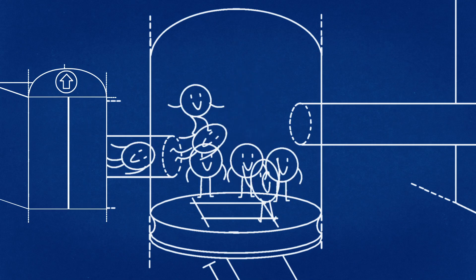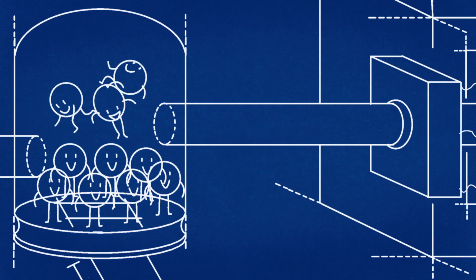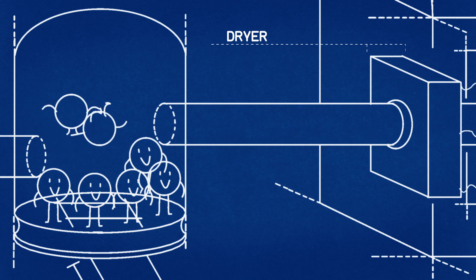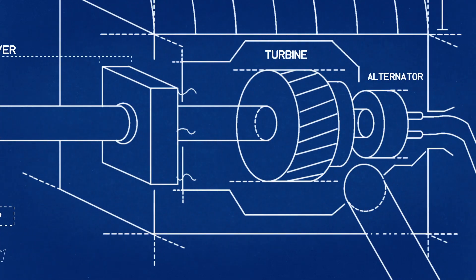The plant has a separator that receives the mixture of steam and water. Its job is to send the steam to a dryer where all traces of moisture will be removed, and the water to a pump that returns the fluid underground. The dry steam drives a turbine.